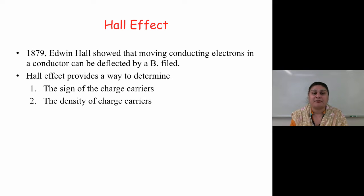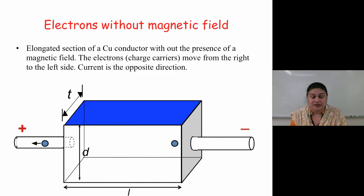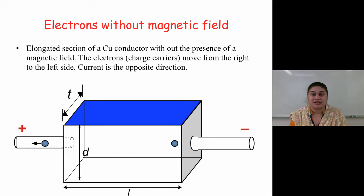In 1879, Edwin Hall showed that moving conducting electrons in a conductor can be deflected by a B field. The Hall effect provides a way to determine the sign of the charge carriers and the density of the charge carriers. If you imagine an elongated section of a copper conductor without the presence of a magnetic field, the electrons move from the right to the left, and the current direction is obviously opposite.